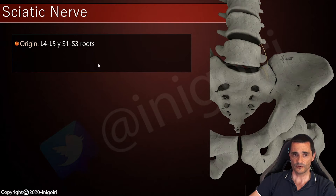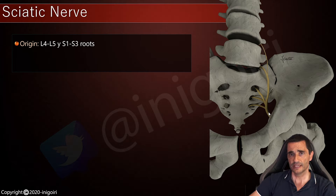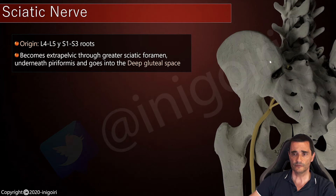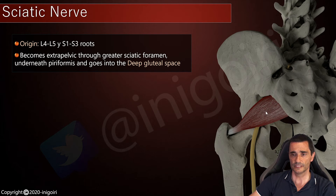The sciatic nerve is originated by the L4, L5, S1, S2 and S3 roots, and they join together to form the sciatic nerve. Its origin is intrapelvic, but from a posterior view, we will notice how it becomes extrapelvic through the greater sciatic foramen, and usually underneath the piriformis muscle. This relationship is very important.